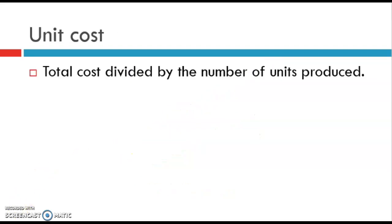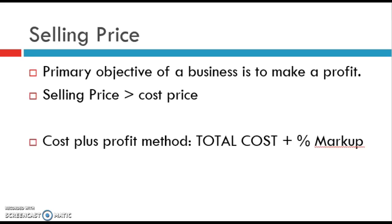What is a unit cost? This is how much it costs for one item being produced. You take the total cost — that's your variable cost plus the fixed cost — and divide it by the number of units produced. Please look very carefully at questions asking for a unit cost versus the total cost of everything being made. The primary objective of any business is to make a profit and maximize profits, so your selling price always has to be bigger than your cost price.